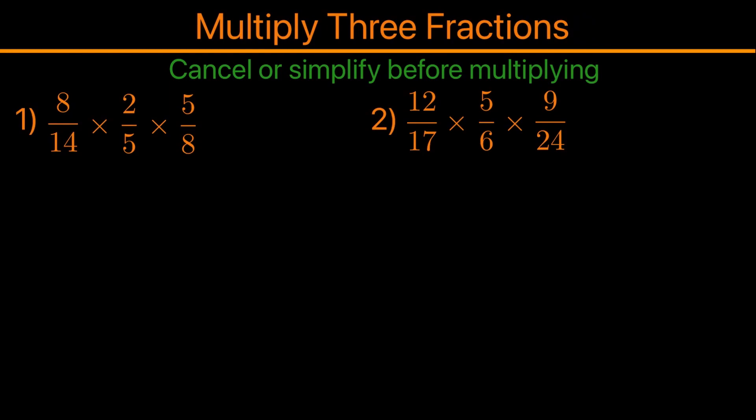So it's always a good idea to first cancel or simplify before multiplying. For the first example, we have 8 over 14 times 2 over 5 times 5 over 8. We can go ahead and write this out, and from here we can see the 5 and 5 can cancel out, so they'll both become 1.